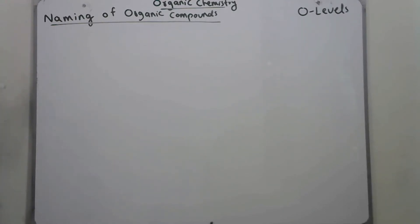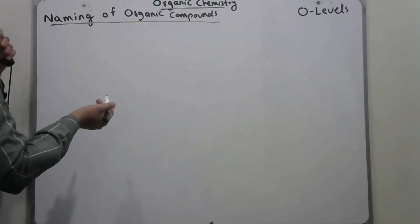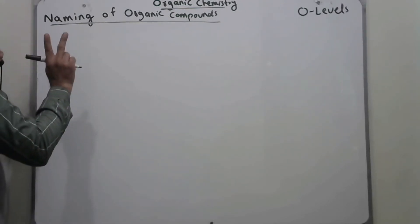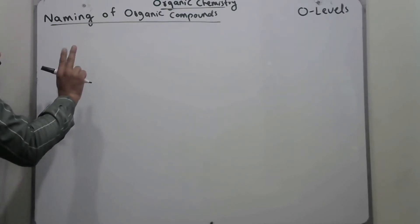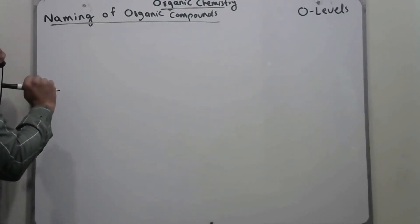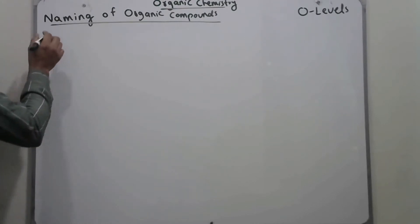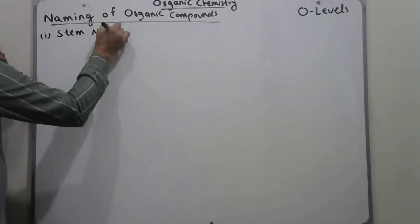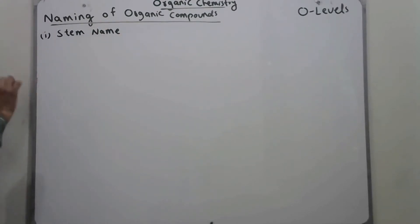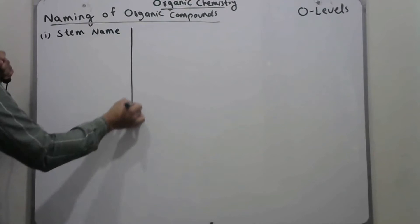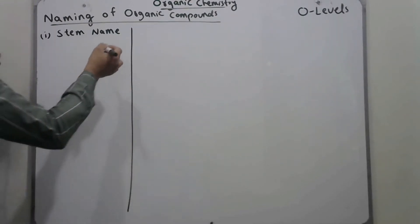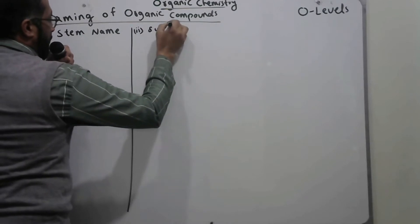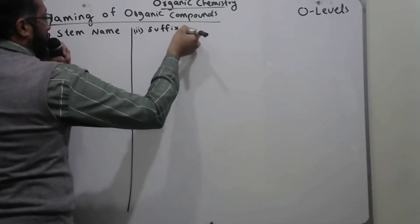Today we discuss the naming of organic compounds. For organic compound naming, only two points are there: first, you write the stem name, and second, you write the name of the functional group, also called the suffix name.